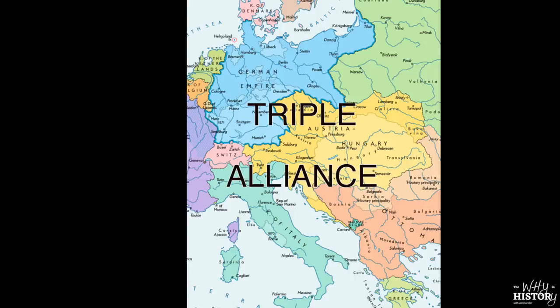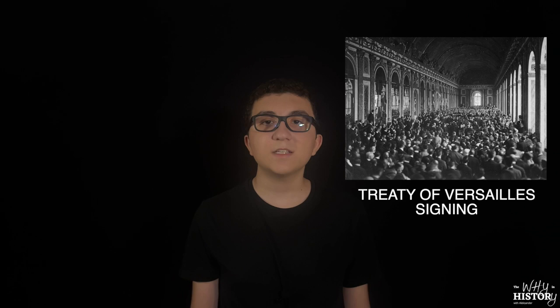Three decades later, World War I came around, and after Italy betrayed the alliance and switched sides, both Austria and Germany fought alongside each other until the end of the war in 1918. After the war, Austria-Hungary was dissolved, leaving Austria with a fraction of its former land. Austria was now alone, and the treaty that ended World War I, the Treaty of Versailles, explicitly said that Austria could never be a part of Germany.